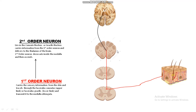The first-order neuron synapses at the second-order neuron. The second-order neuron then decussates — meaning it crosses to the opposite side. If the sensory information is coming from the right side of the body, the second-order neuron decussates to the left side. If the sensory information is coming from the left side of the body, the second-order neuron crosses to the opposite side, which is the right. The second-order neuron decussates inside the medulla oblongata.